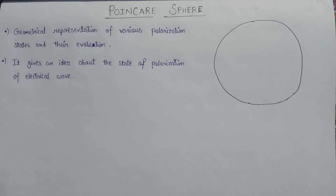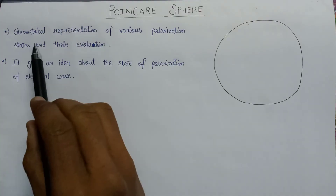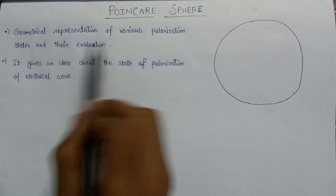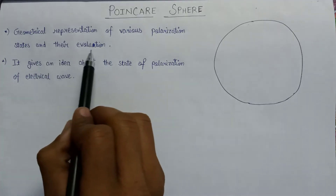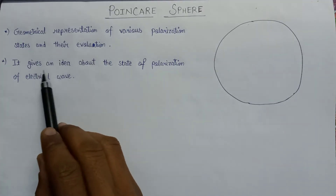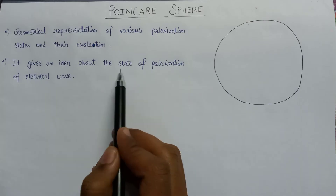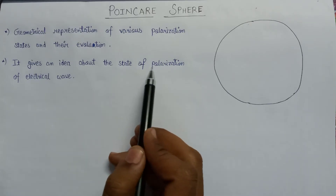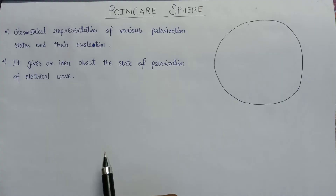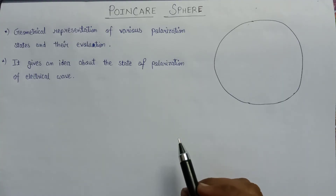Welcome all. In this lecture we are going to discuss the Poincaré Sphere. A Poincaré Sphere is a geometrical representation of various polarization states and their evolution. It gives an idea about the state of polarization of an electric wave — specifically, it only gives an idea about the polarization states.